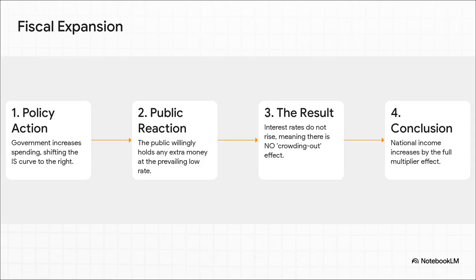The real secret sauce is in step three. Normally, when the government spends a ton of money, it has to borrow. That competition for money drives up interest rates and crowds out private investment. But not here. In a liquidity trap, everyone is already hoarding cash. So when the government comes along and says 'want to buy some bonds?', people say sure — they don't need to be convinced with higher interest rates. The result? You get a pure boost from government spending without any of the negative side effects on private investment. It's a huge win for the economy.